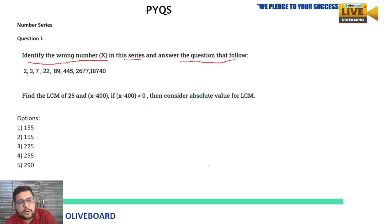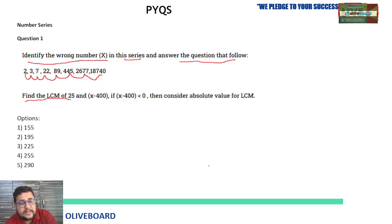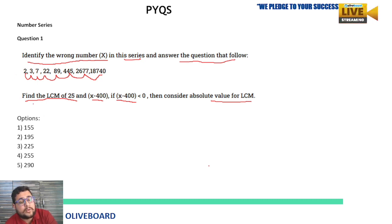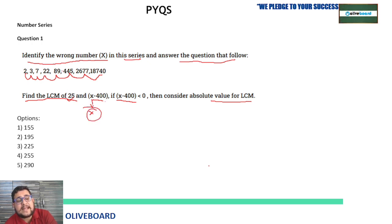The first question: identify the wrong number X in the series — 2, 3, 7, 22, 89, 445, 2677, 1874. Find the LCM of 25 and (X − 400). If X − 400 is less than zero, consider the absolute value of the LCM. So to find the LCM, we must first know the value of X, which is the wrong number in the series.